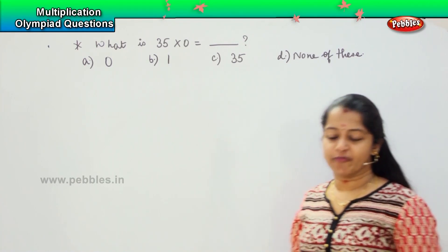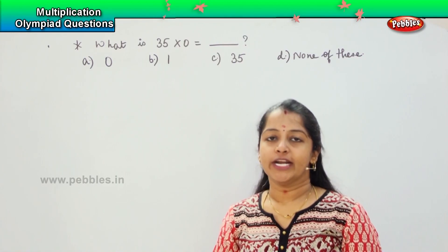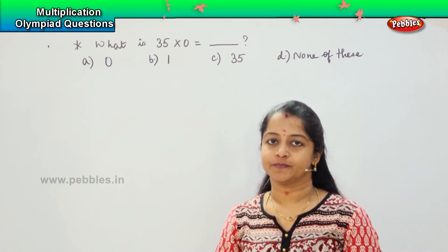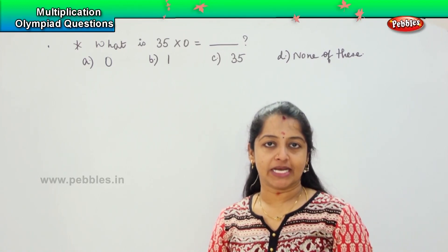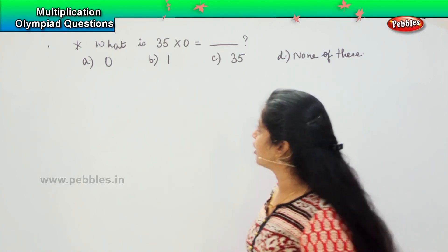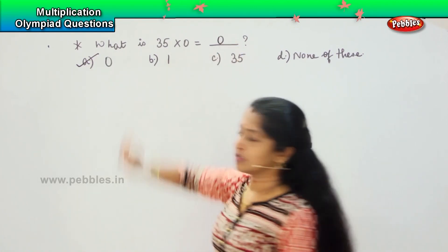Do you remember the properties of multiplication we learned? What did I tell you? Anything multiplied with 0 will give me what answer? Excellent. Anything multiplied with 0 will give me the answer 0, right? So which is the right option here? Good. Option A is my right answer.